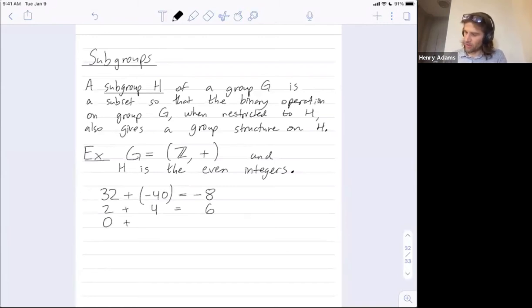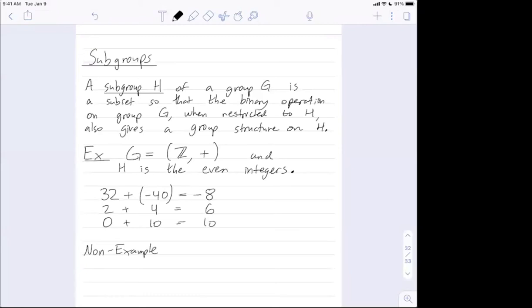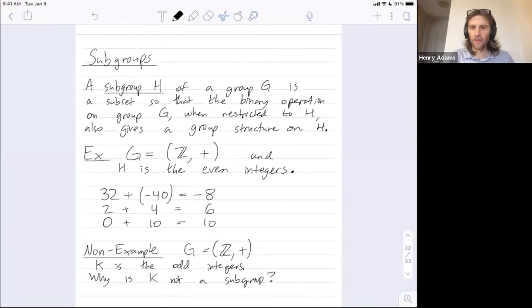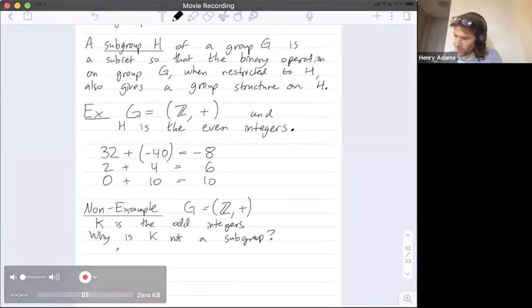All right, so let's try a non-example. Zero is an even number, right? That's right. Yeah, that'll be important. And it's not an example. So let's let G be the integers under addition again. Let me call it K - K is the odd integers. Why is K not a subgroup? Several different reasons why K is not a subgroup. One is that it has no identity. Yep, that's totally right. So one answer is that there's no identity.